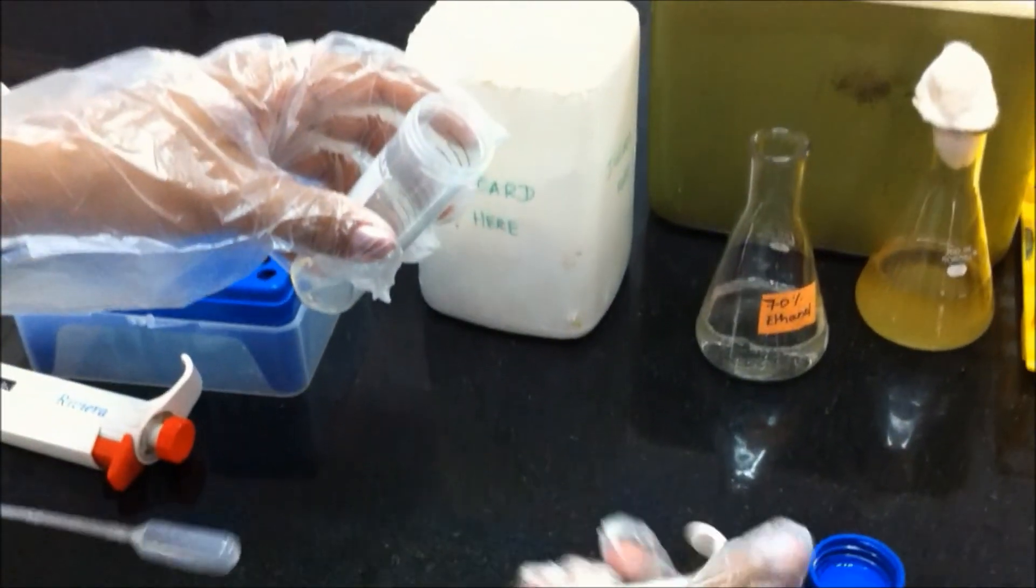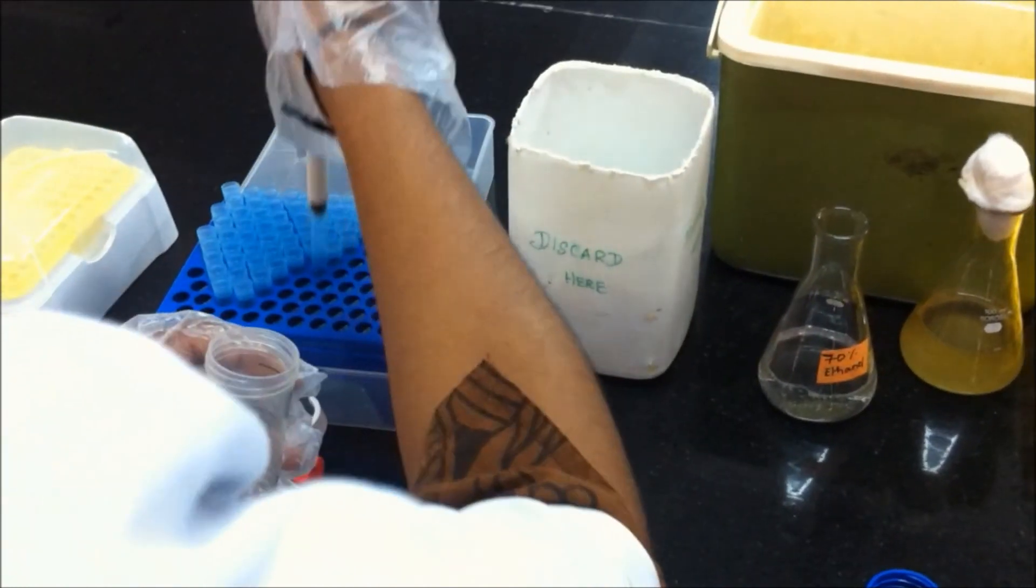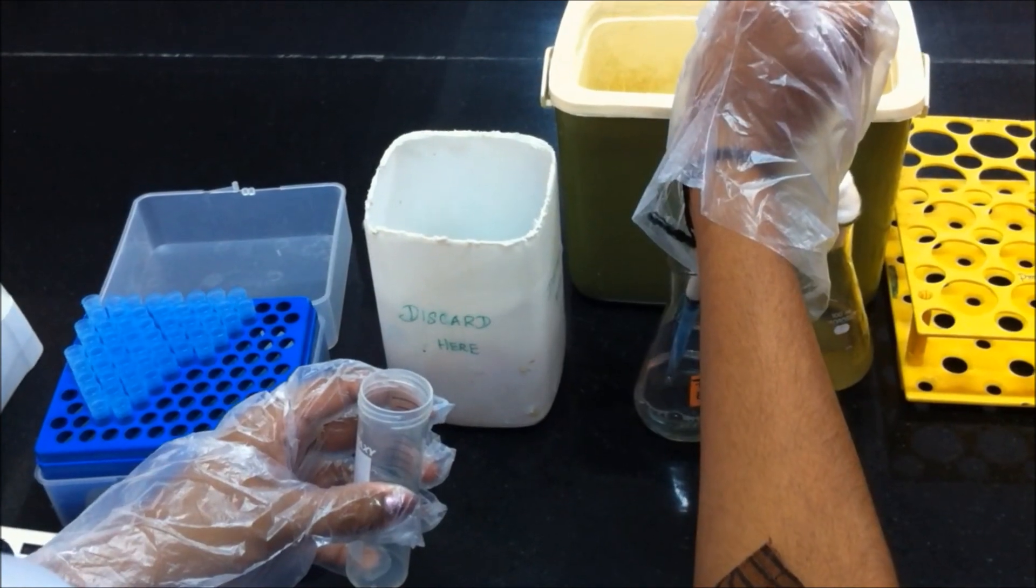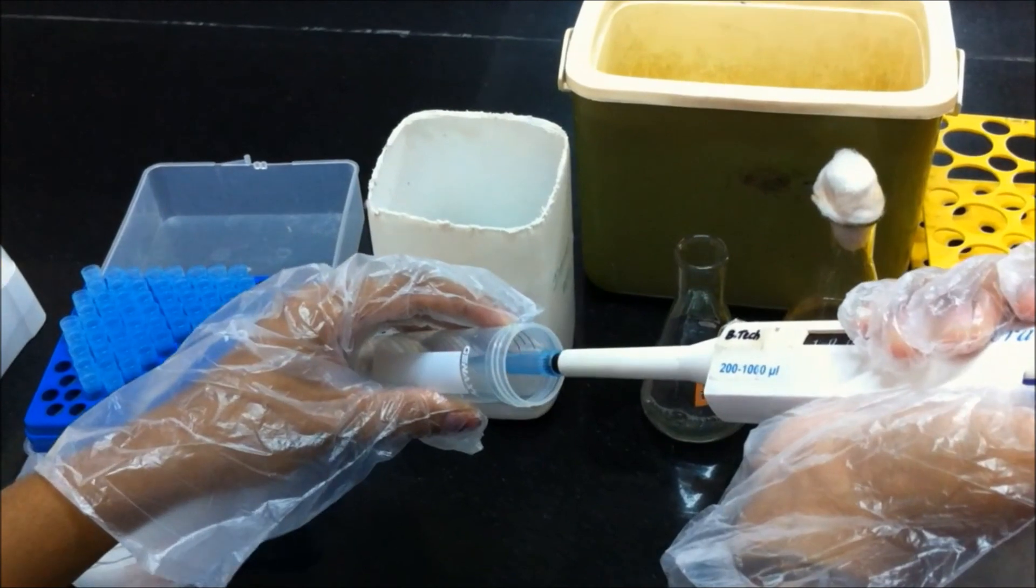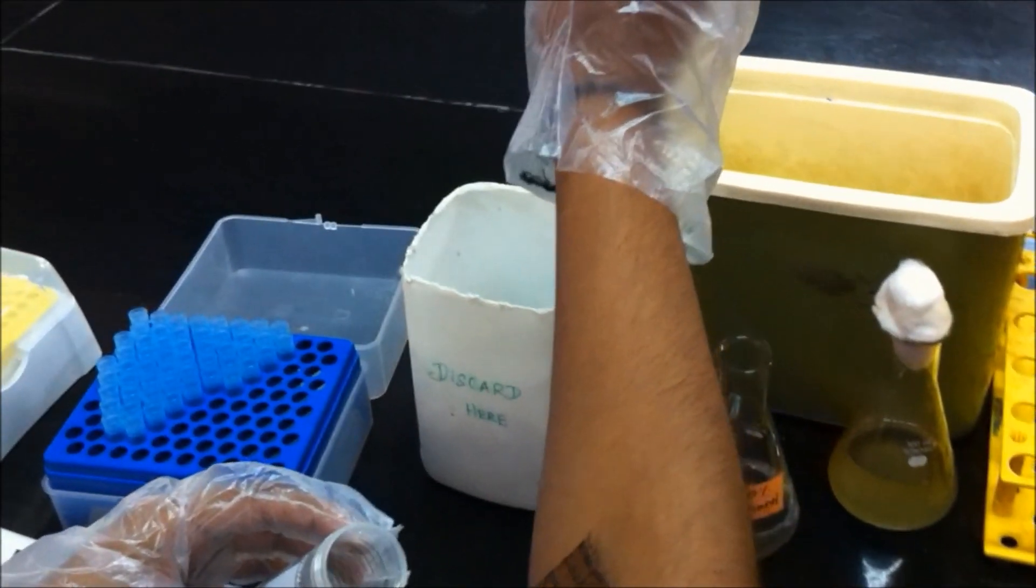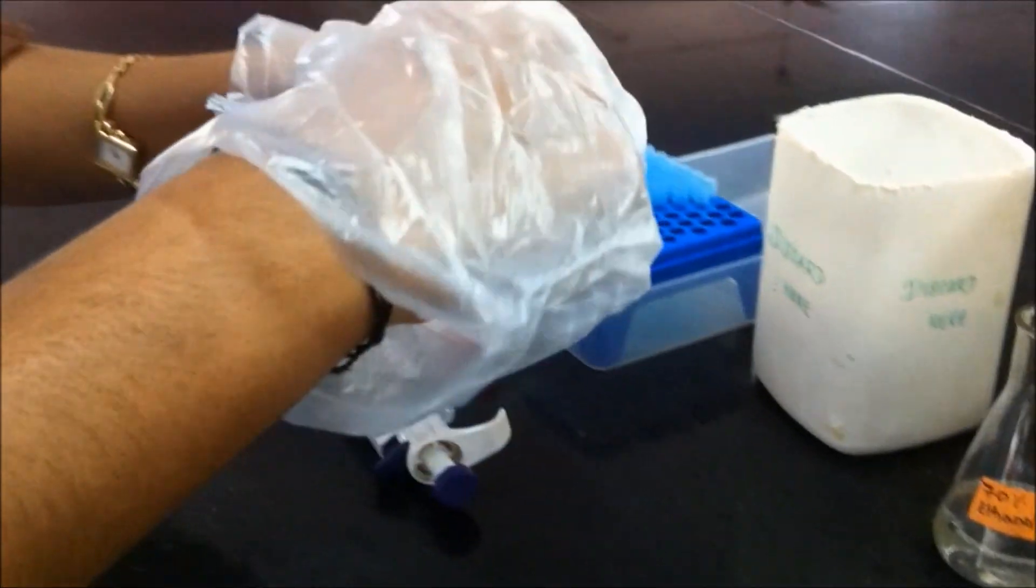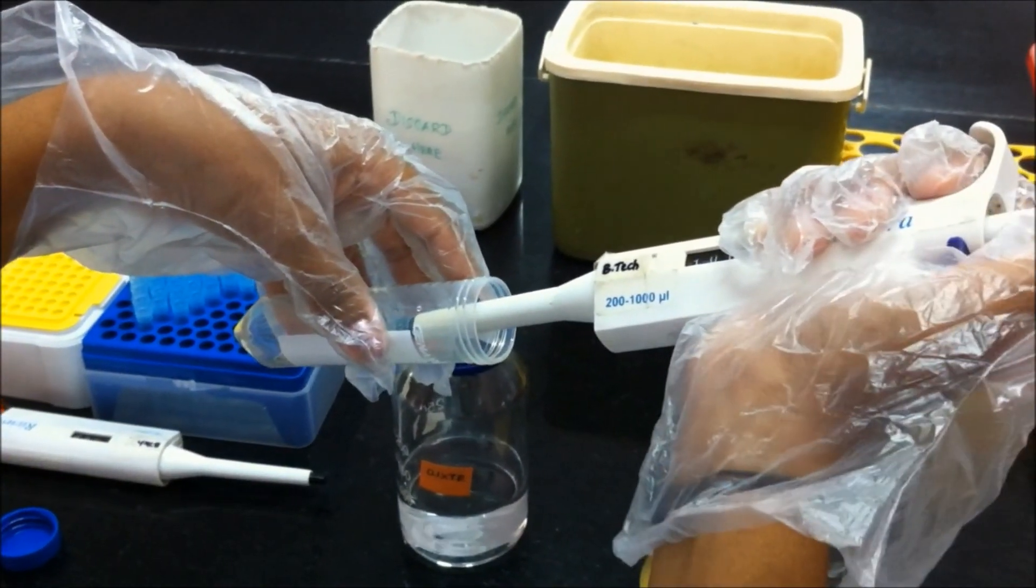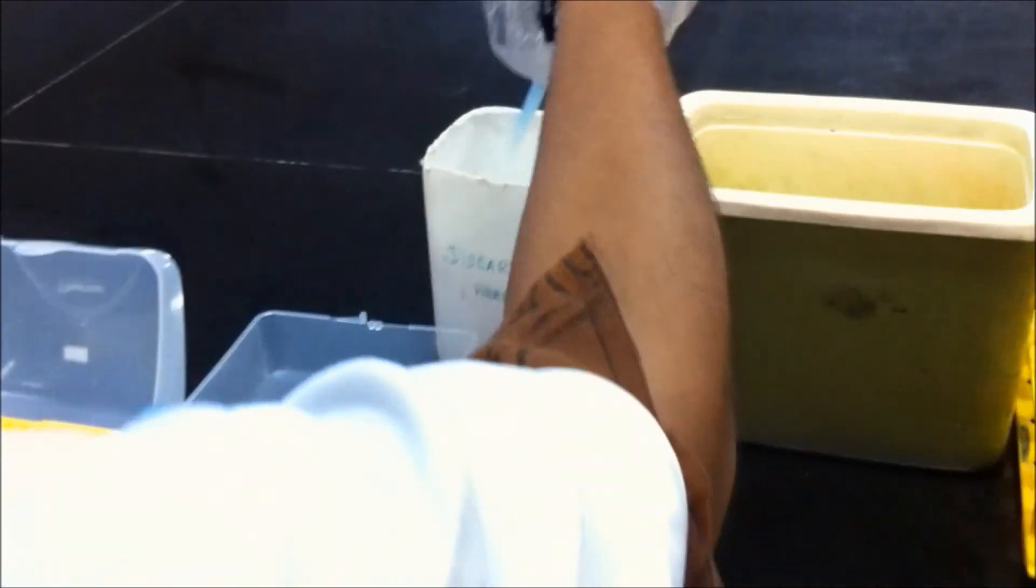Rinse the pellet with 1 ml of 70% ethanol and centrifuge at 12,000 rpm for 10 minutes. Remove the supernatant and air dry the pellet for 10 minutes.